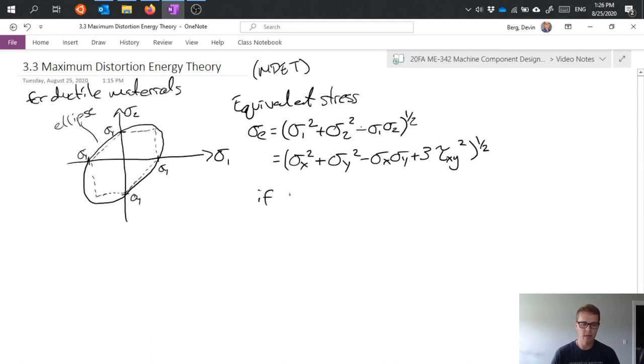And then the criteria is simply that if this equivalent stress exceeds our yield stress, then we predict that the part will yield. So same general principle to the max shear stress theory in that as long as we're inside the ellipse everything's good. If we plot our sigma 1, sigma 2 points outside the ellipse, then we're predicting failure.